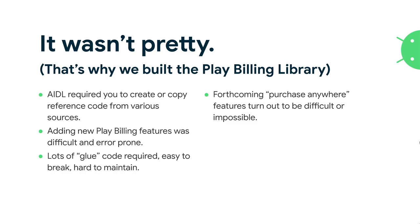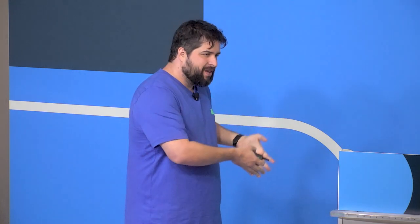Some new features like purchase anywhere — buying out of the Play Store — are only possible with a new version, a refactoring of our Play Billing services. And with AIDL, since it's a service interface and a file you have to put in your code and bind to the service, there is no clear way to check for new versions. You must go to the Google documentation, check the new specification, and implement it in your client. But when using Gradle dependencies, it can say 'there's a new version' — that wasn't possible with AIDL.